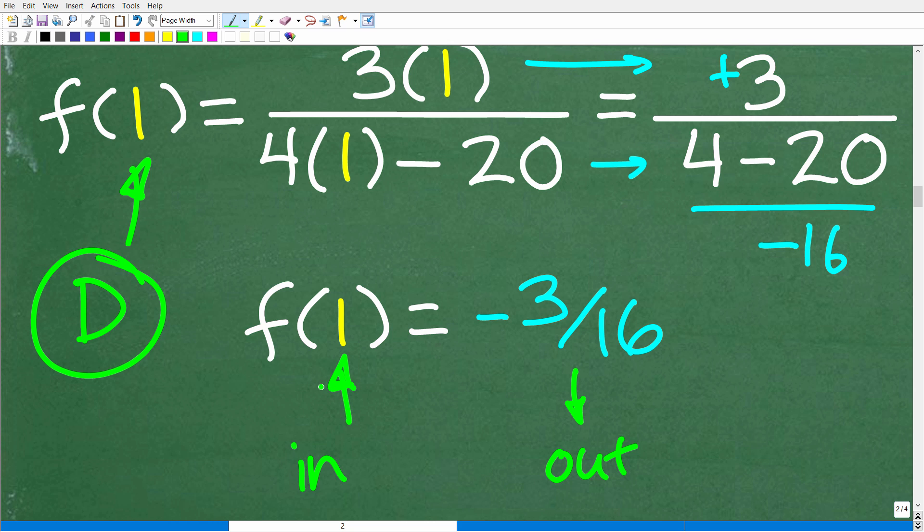But if the numbers that you can plug in to a function where you actually get an output value, all these set of numbers is called the domain. So 1 would be a part of our domain, and the output values that are generated by all these input values is called the range. So the domain is a set of all input values that you can plug into a function, and then all the respective output values is called the range of a function.